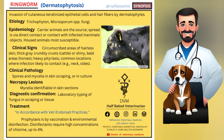Clinical signs include circumscribed areas of hairless skin with thick gray crumbly crusts in cattle, or shiny bald areas in horses. Heavy pityriasis is also noted. Common locations are where infection is likely to occur, such as the neck and sides.